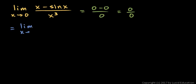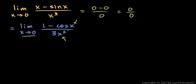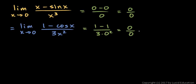This will equal the limit as x approaches 0 of the derivative of the numerator, which will be 1 minus cos x, over 3x squared, the derivative of the denominator. If we put in 0 for the variable, we end up with 1 minus cos of 0, which is 1, over 3 times 0 squared, so that's 0 over 0. This limit is still an indeterminate form, so we apply L'Hôpital's rule again.